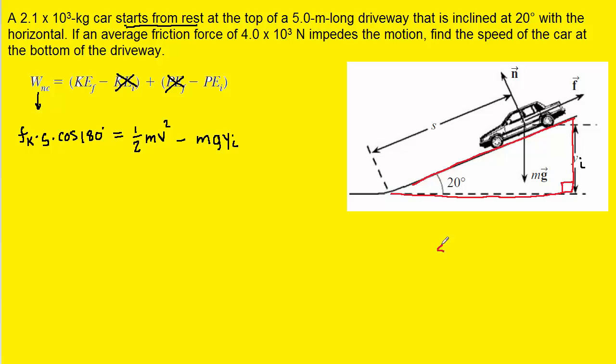Now, looking at the angle of 20 degrees, we could say that the sine of that 20 degree angle is equal to the side that is opposite of that angle, which would be that y initial, divided by the hypotenuse of this right triangle, which we have marked as s. We could solve this equation for yi by multiplying both sides by s so that it cancels on the right-hand side. And when we do that, we see that the initial height is equal to s times the sine of 20. So we're going to come over here, and we're going to replace the initial height with s times the sine of 20 degrees.